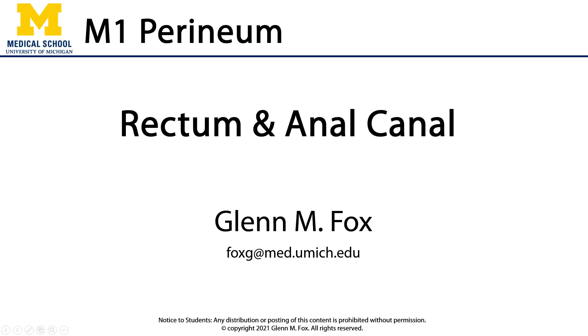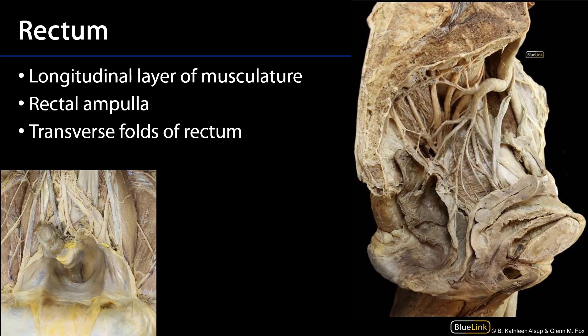Let's talk about the rectum and anal canal. The rectum is a continuation of the sigmoid colon, and the rectosigmoid junction is approximately at the level of S3.